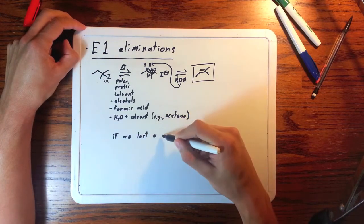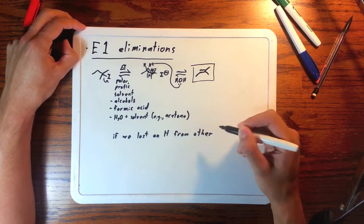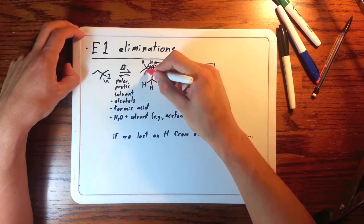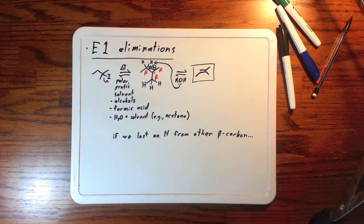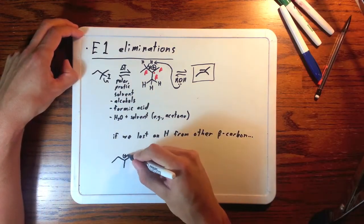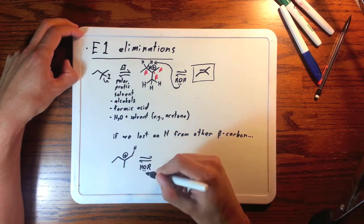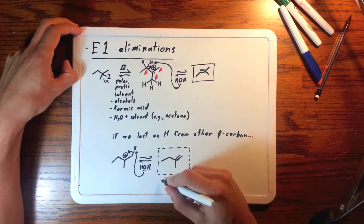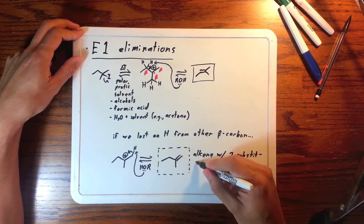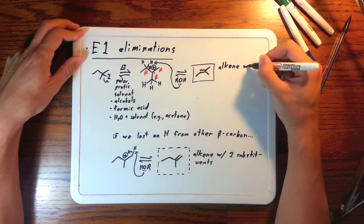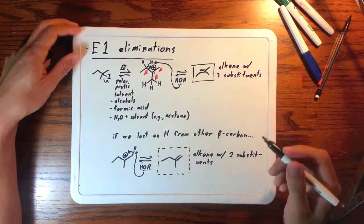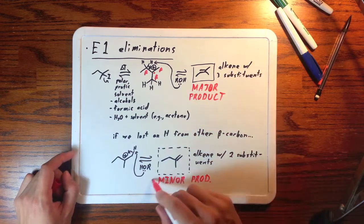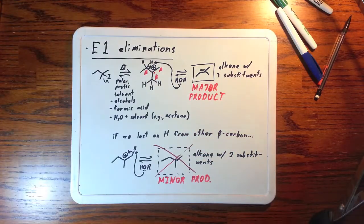There's also a minor product. If we lost an H from a different beta carbon — like an H from these two equivalent methyl groups — we would get this instead. This alkene has two substituents, which is not as stable as our alkene with three substituents. So the one with three is the major product and the one with two is the minor product. That's it for E1 eliminations.